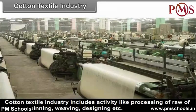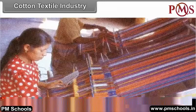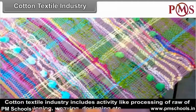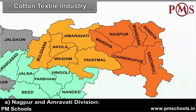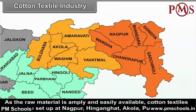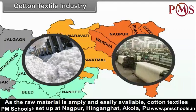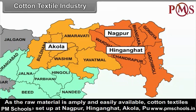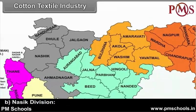Cotton textile industry includes activities like processing of raw cotton, spinning, weaving, designing, etc. In the Nagpur and Amravati Division, as raw material is amply and easily available, cotton textile mills were set up at Nagpur, Hinganghat, Akola, Pulgao, Badnera and Achalpur cities of the Vidarbha region.